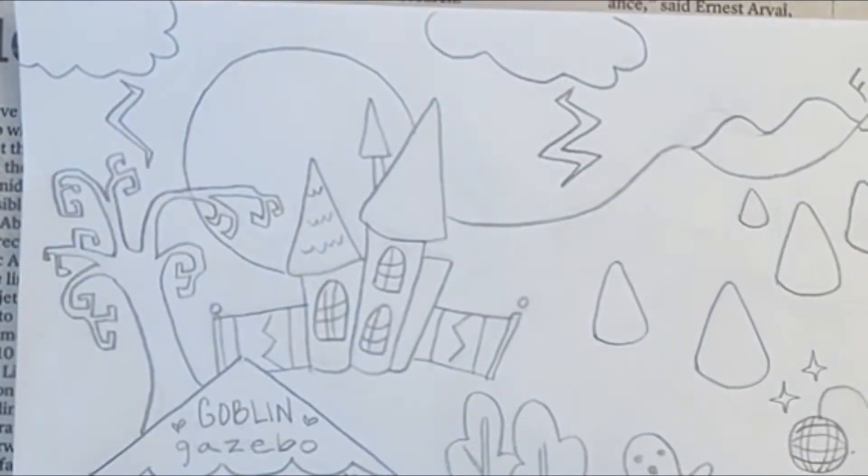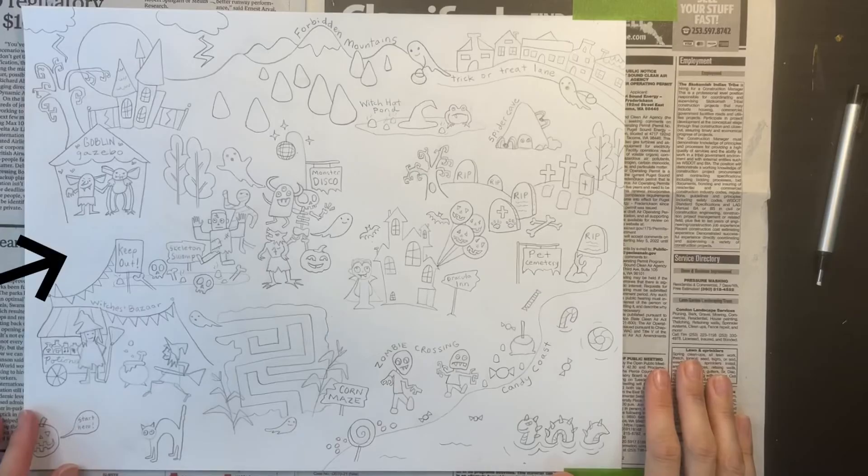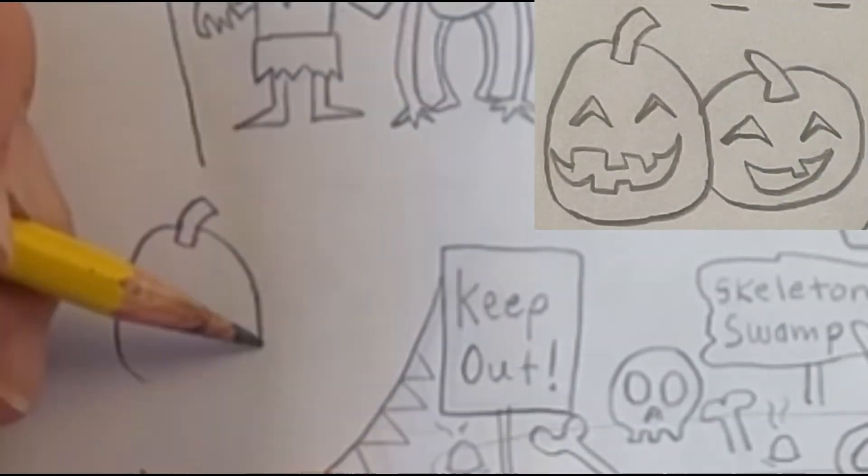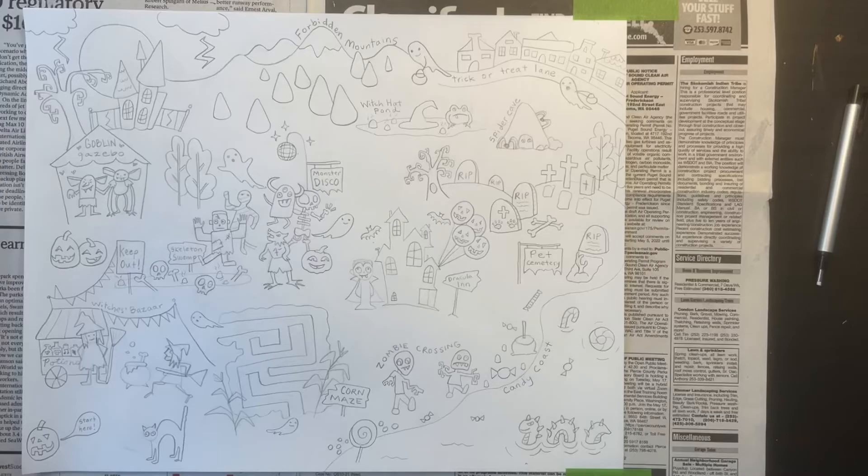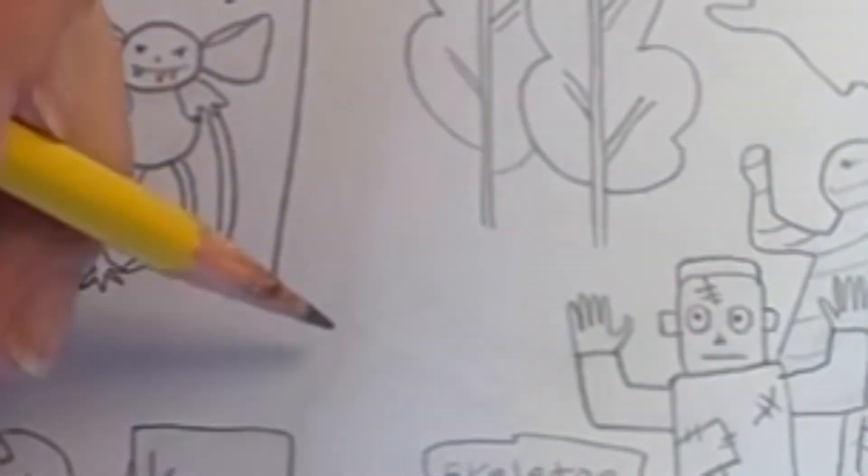I see there's a bit of space in front of my Goblin Gazebo, so I'm adding a couple of jack-o'-lanterns. This is meant to be a treasure map, so I'm drawing an X to mark the spot where the treasure is.